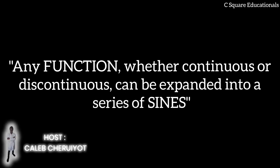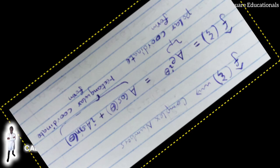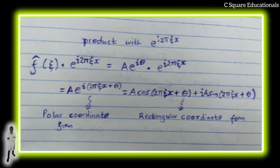For the transform of any function, the coefficients f̂(ψ) are complex numbers which have two equivalent forms: the polar coordinate form f̂(ψ) = A e^(iθ), and the rectangular coordinate form A cos θ + iA sin θ. Multiplying the coefficients by e^(i2πxψ), we get f̂(ψ) · e^(i2πxψ) = A e^(i2πxψ) = A e^(i(2πxψ + θ)) in polar form, which equals A cos(2πψx + θ) + iA sin(2πψx + θ) in rectangular coordinate form.